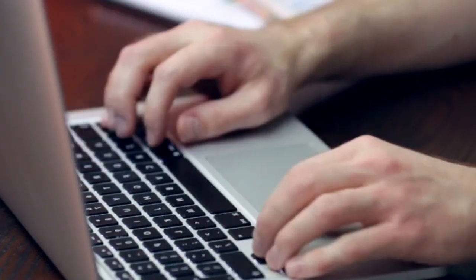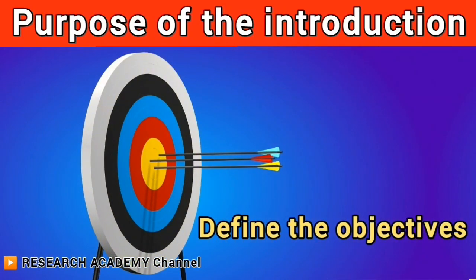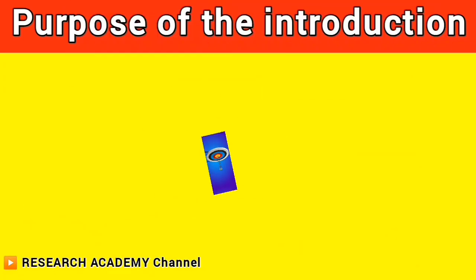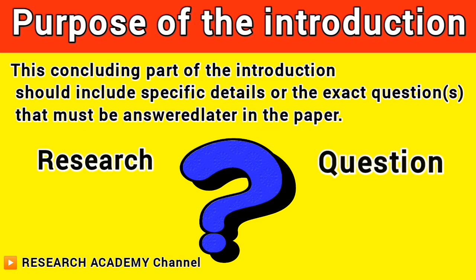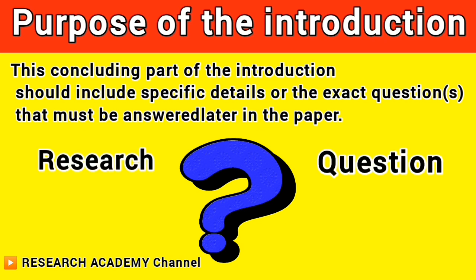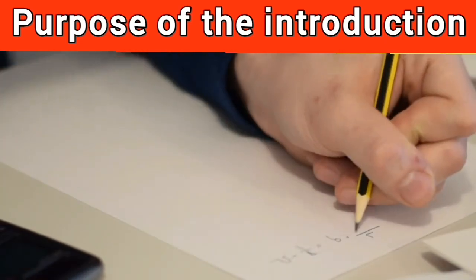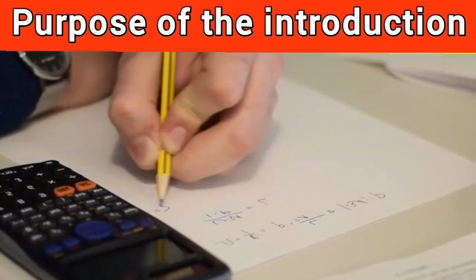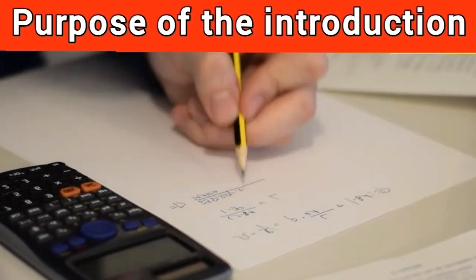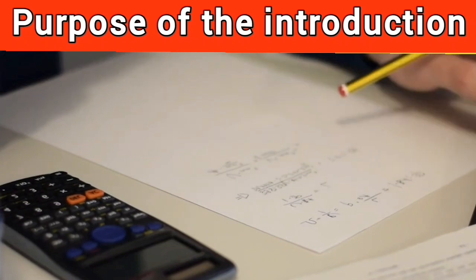Now that you have given the background and set the context, the final part of the introduction should define the objectives of the experiment or analysis described in the paper. This concluding part should include specific details or the exact questions that must be answered later in the paper. The formulation of your objective is of paramount importance, and you should take the time to think about this carefully. The objective must be explicitly stated and should include the exact parameter you aim to assess and by what means.